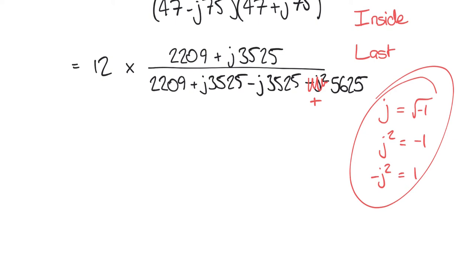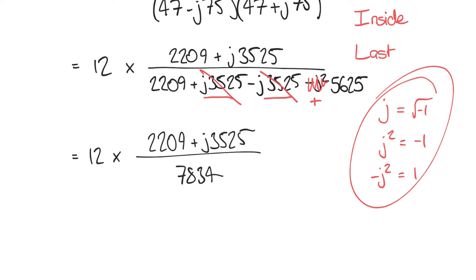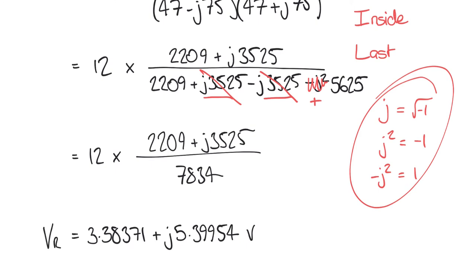The j terms in the denominator cancel — plus j3525 and minus j3525 disappear — leaving 2209 + 5625 = 7834. Dividing both numerator terms by 7834 and multiplying by 12, we get V_R = 3.38371 + j5.39954 volts.